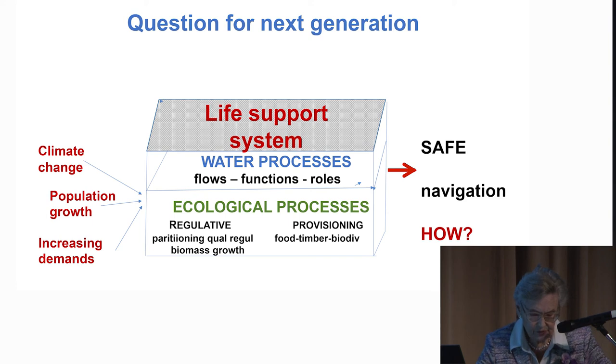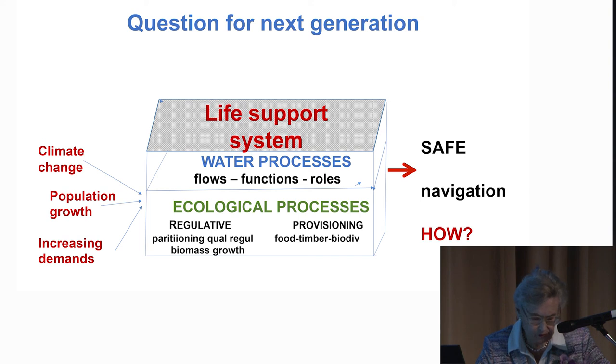The question for the next generation is how further stresses caused by tomorrow's climate change, continued population growth, and increasing human demands will continue to disturb the life support system and its interactions between water flows, functions, and roles, and relevant ecological processes like food production, timber production, and biodiversity. The critical question to focus on will be keeping the planet in the present favorable Holocene-like conditions with relatively stable climate by safe navigation of the life support system. What transformations will be needed? What shifts in governance approaches in terms of scope, scale, and speed will be required? Thank you.